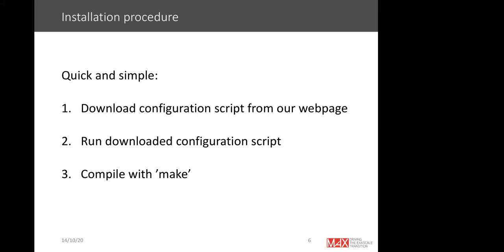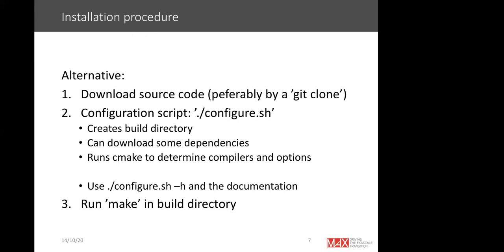The basic procedure to start with FLEUR is relatively simple. You can download our configuration script from the webpage, run it, and it will download the FLEUR code and generate a build directory where you compile with make. Alternatively, do a git clone from our repository, then run the configuration script which creates the build directory, optionally downloads dependencies like HDF5, and runs CMake to determine your compilers and options. The configure script has a help option to see what you might want to tune for your system.